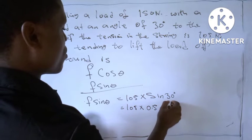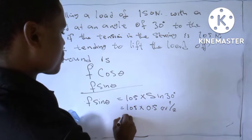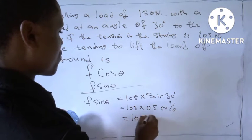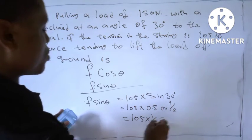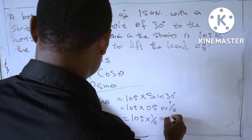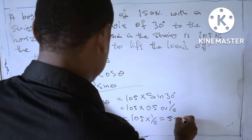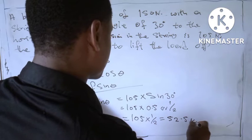So equal to 105 times 1 over 2. If you multiply, it will give you 52.5 N.